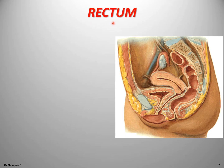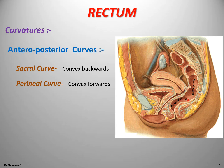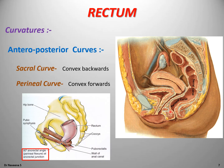The rectum shows curvatures both anteroposteriorly and bilaterally. The anteroposterior curves are 2 in number: the upper sacral curve, which has convexity backwards, and the lower perineal curve, which has convexity forwards. The perineal curve is seen towards the anorectal junction and is maintained by the puborectal sling, a muscular sling formed by the puborectalis muscle fibers of the levator ani muscle, or pelvic diaphragm.